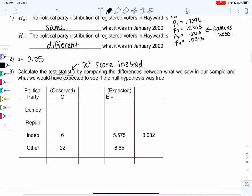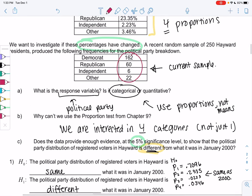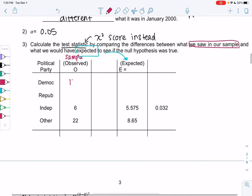It's going to take a little bit of time. If you make a table, it helps. To calculate this, we're going to compare the differences in what we saw in our sample. I'm going to call that the observed column - that's what we saw in our sample. We're going to compare it to what we would expect if the null hypothesis was true. Observed is just what did we see in our sample: 162 for Democrats, 60 for Republicans, 6 for Independent, and 22 for Other, and they added up to 250 because that was the sample size.